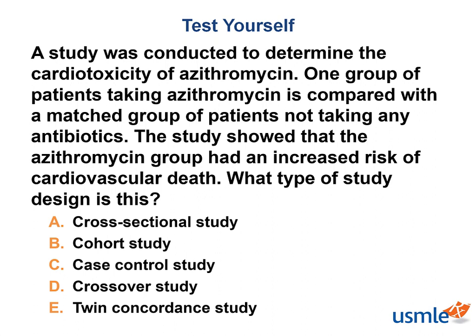One group of patients taking azithromycin is compared to a matched group of patients not taking any antibiotic. The study showed that the azithromycin group had an increased risk of cardiovascular death. What type of study design is this? The answer is B — cohort study, and it is prospective. We know it is a cohort study because two similar matched groups are being compared. One group experienced an exposure — the azithromycin — and is being observed for the development of disease. It is prospective because both groups are being monitored for future events. For the bonus point: relative risk of azithromycin exposure and cardiovascular death.